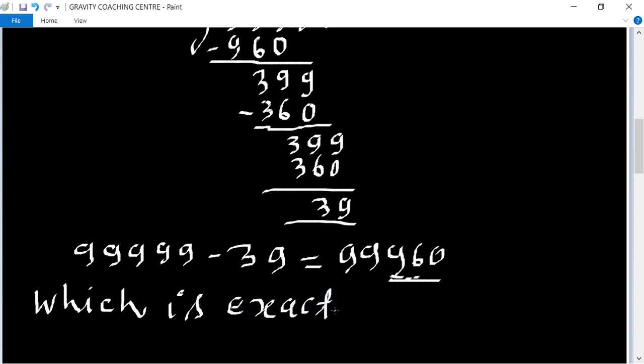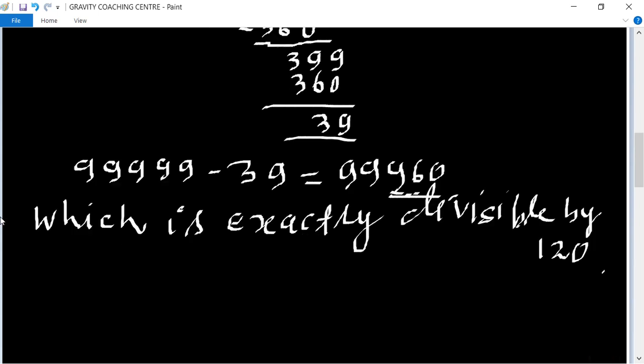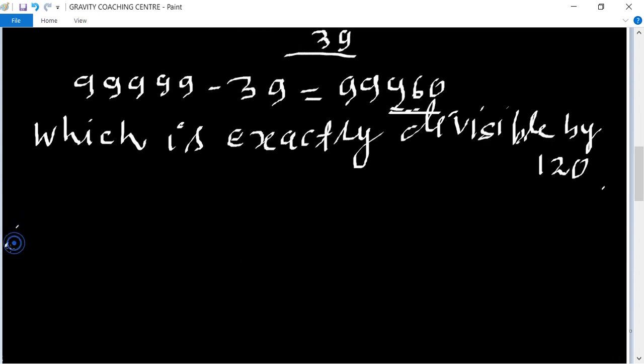So 99960 is exactly divisible by 120. But we need a number which when divided by 120 leaves the required remainders.